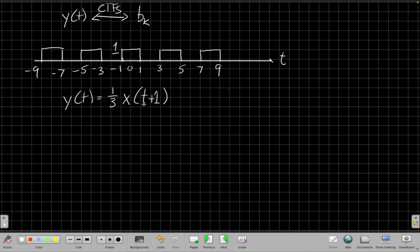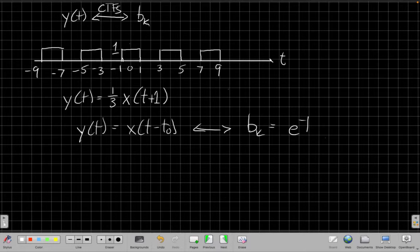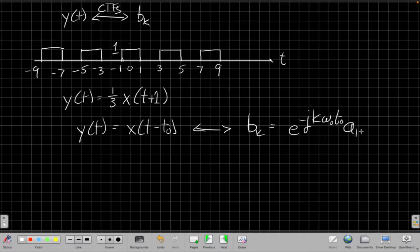Okay, so the property we're going to use here is the time shift property. We know, in general, y(t), if I shift by t0 in time, what that says is that the new Fourier series is e to the minus j k omega 0 t0 times a sub k. So I take the old Fourier series and multiply it by this complex exponential.